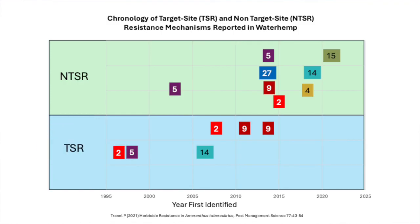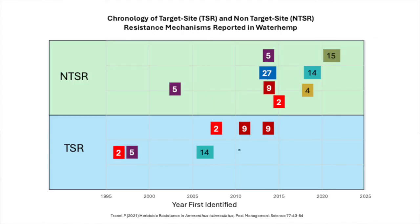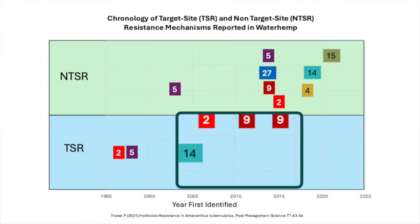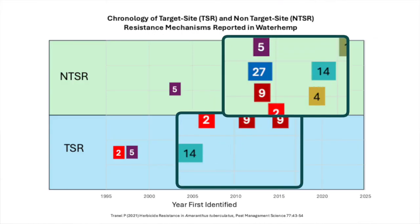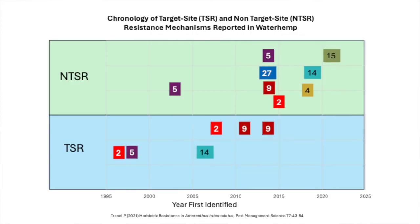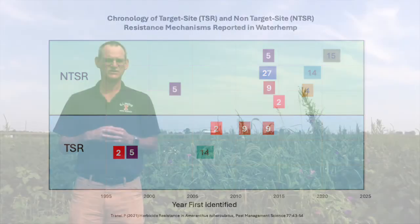Increasingly, we're seeing more and more cases of non-target site resistance in these weeds. So we have to continue to worry about target site resistance — it has not gone away — but we also have to worry about non-target site resistance, which is making our chemical management much more challenging and really emphasizing the need for using non-chemical strategies.